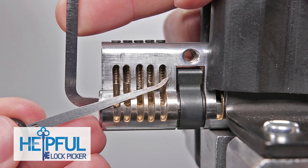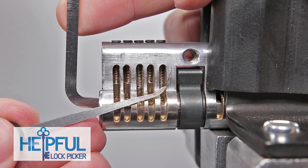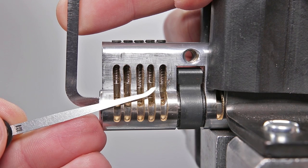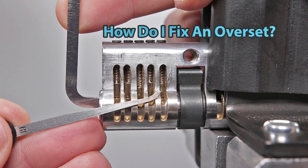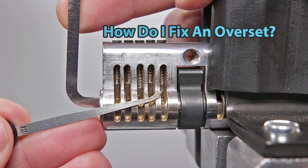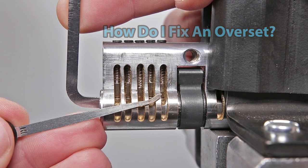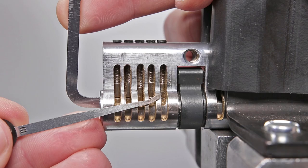Hey guys, how's it going? This is the Helpful Lockpicker here, and I have a question for you. Have you ever been picking a lock and overset a pin and wondered, is there a better way to get this lock open other than just completely resetting and starting over? That is precisely the question that I am looking to answer today.